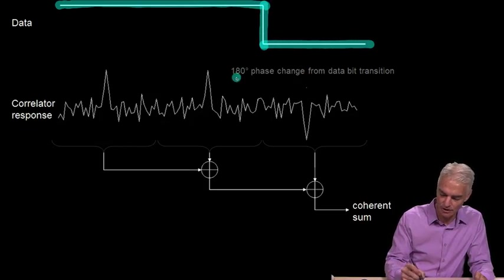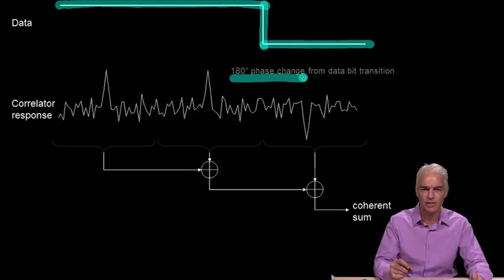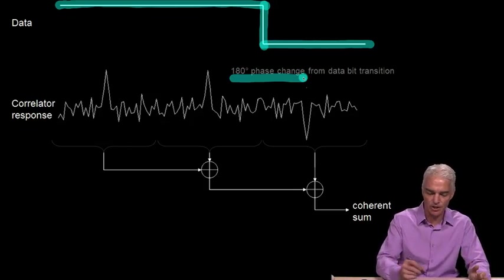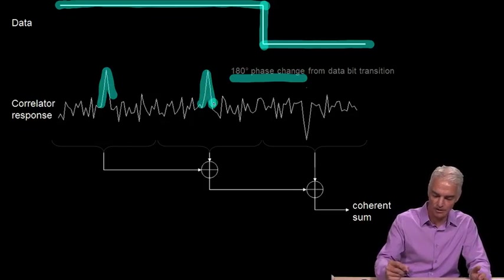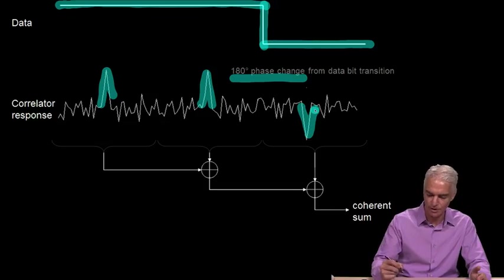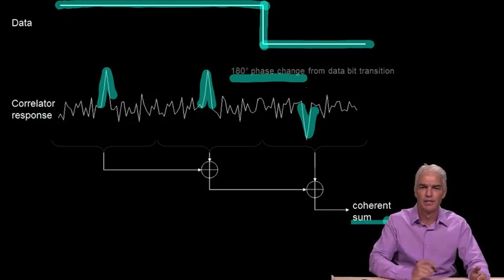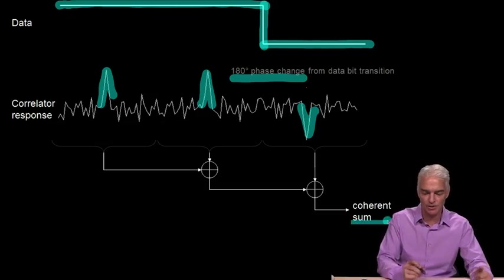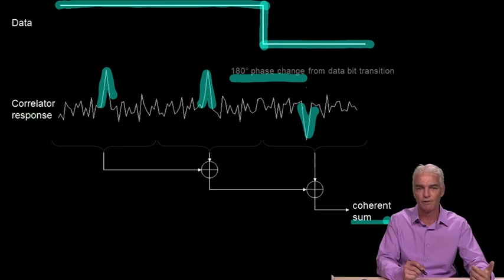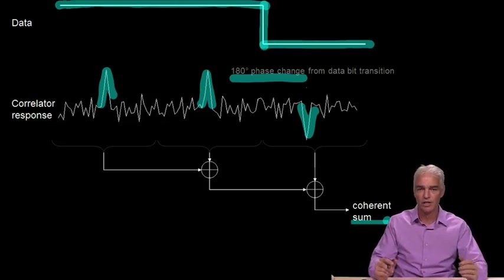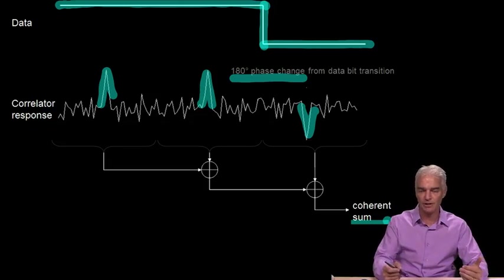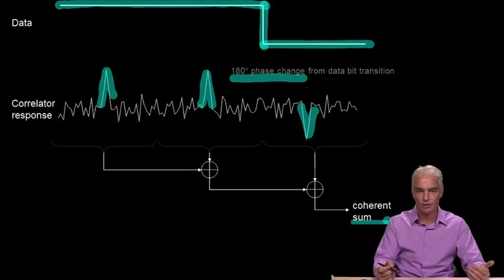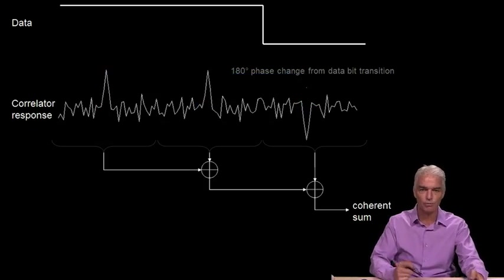And so there's 180 degree phase change right there. Well, that means inside that integration, you'd get a positive peak, positive peak, a millisecond later, and then a negative peak. So what happens is this coherent sum, instead of being three times bigger than it was, these last two peaks just cancel each other out. And you get no benefit from three milliseconds of integration compared to one millisecond of integration. And you can see that if you keep on doing this for too long over many data bits, then you'll just have negative peaks adding up to positive peaks and you'll get nothing out of your coherent integration when you were hoping to get a nice big peak. So that's the problem with data bits.